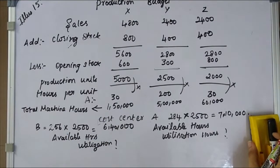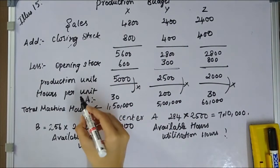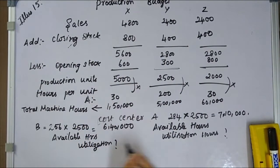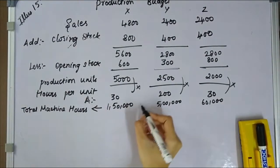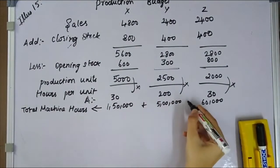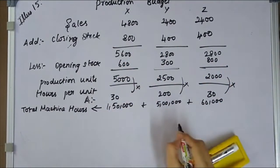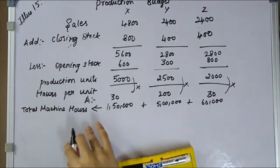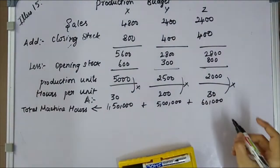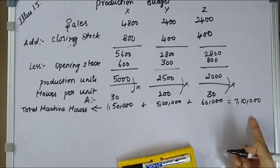Total machine hours for products X, Y, Z combined equals 7,10,000 for cost center A. Number of machines in cost center A is 284. We calculate the number of machines required per product by taking each product's machine hours divided by total machine hours, multiplied by total number of machines.